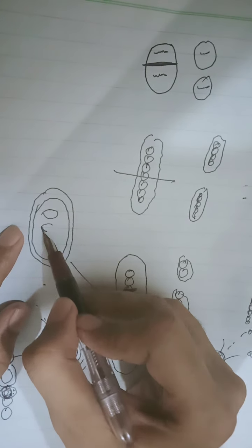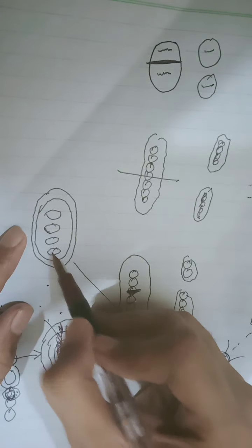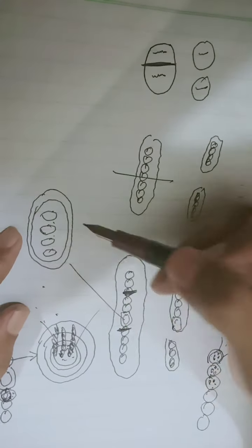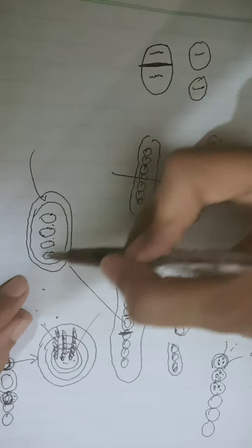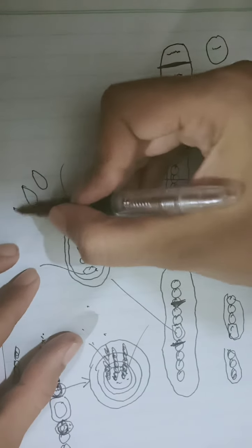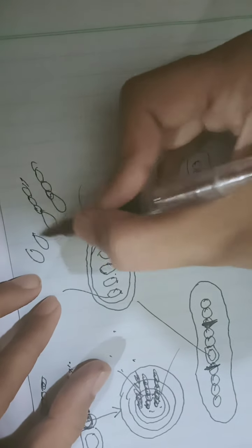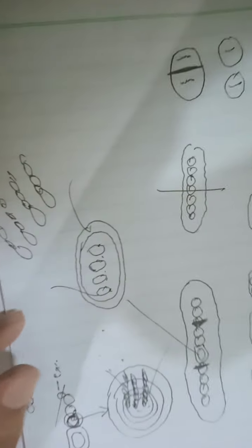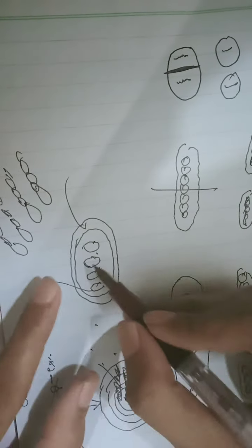Another method involves heterocysts. Smaller germling cells are formed inside the heterocyst. When the heterocyst ruptures, these germling cells are released and a new trichome develops from them.